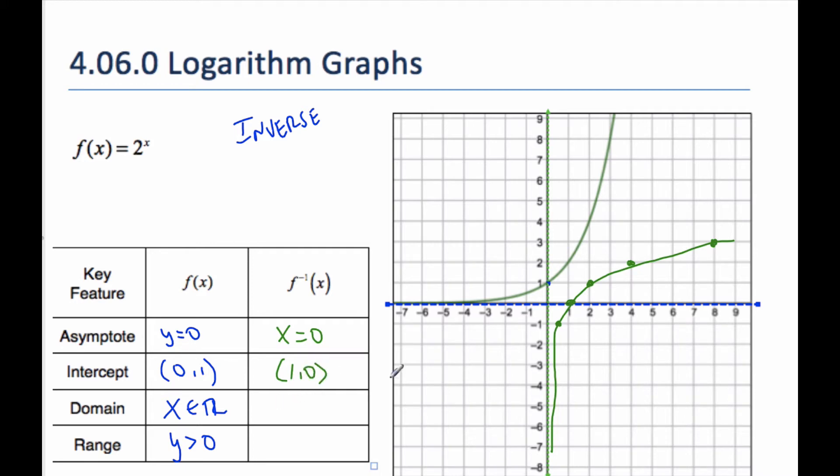And my domain is everything bigger than 0. So my domain is x is bigger than 0. And now my range, though, can be any real number. And notice how these values switched. The x and y switched, and there's my inverse.